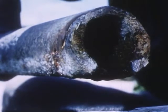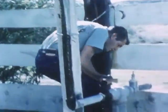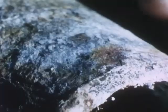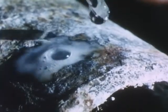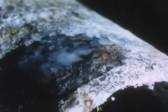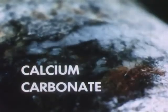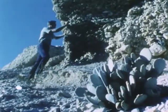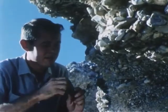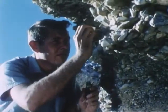This irrigation pipe on a Nevada ranch is supplied by underground water from a nearby well. Over the years, the water has deposited a white crust on the pipe. When we drop some acid on the crust, a fast bubbling reaction takes place. This bubbling reaction indicates the presence of calcium carbonate. This rock is in the hills just above the ranch with the crusted pipe. If acid is dropped on the rock, again a bubbling reaction takes place. There must be calcium carbonate in the rock.